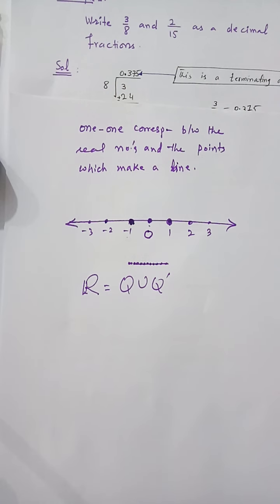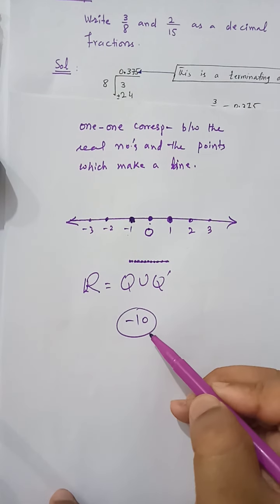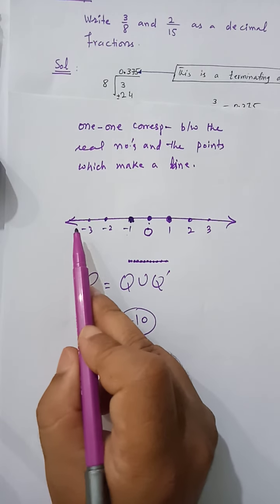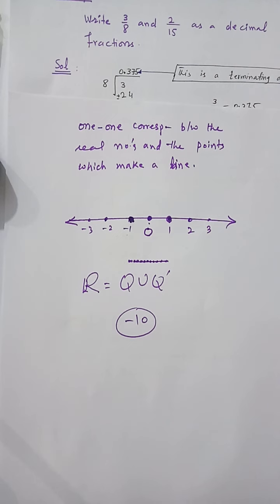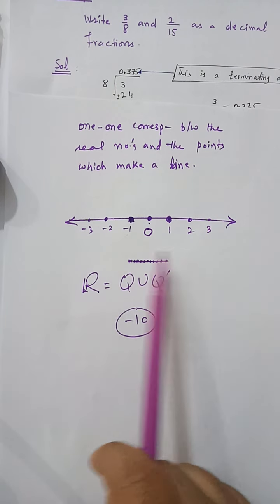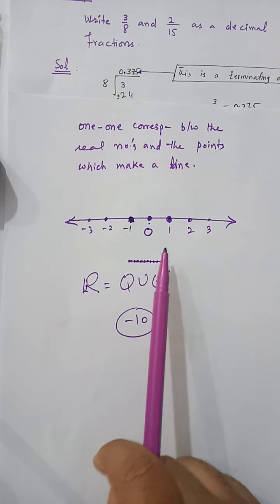The geometrical representation of 1 means it is assigned to a point one unit away from the reference point on the right. If someone asks the geometrical meaning of -10: it is assigned to a point 10 units away from the reference point, and that point lies to the left of zero. The distance between the point assigned -10 and the reference point is 10 units.